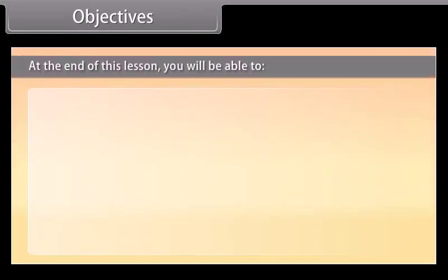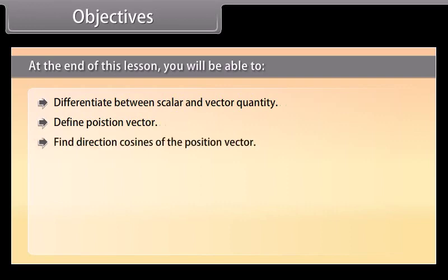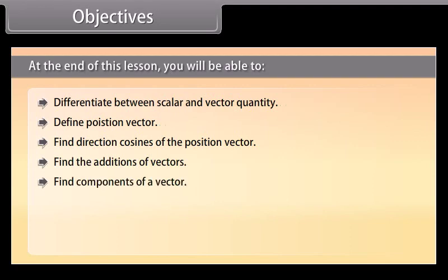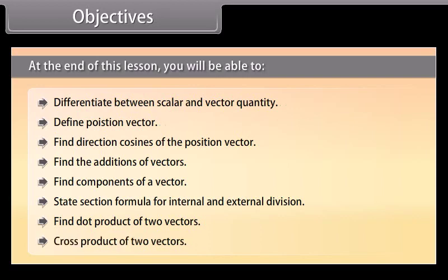Objectives. At the end of this lesson, you will be able to: differentiate between scalar and vector quantity; define position vector; find direction cosines of the position vector; find addition of vectors; find components of a vector; state section formula for internal and external division; find dot product of two vectors; and cross product of two vectors.